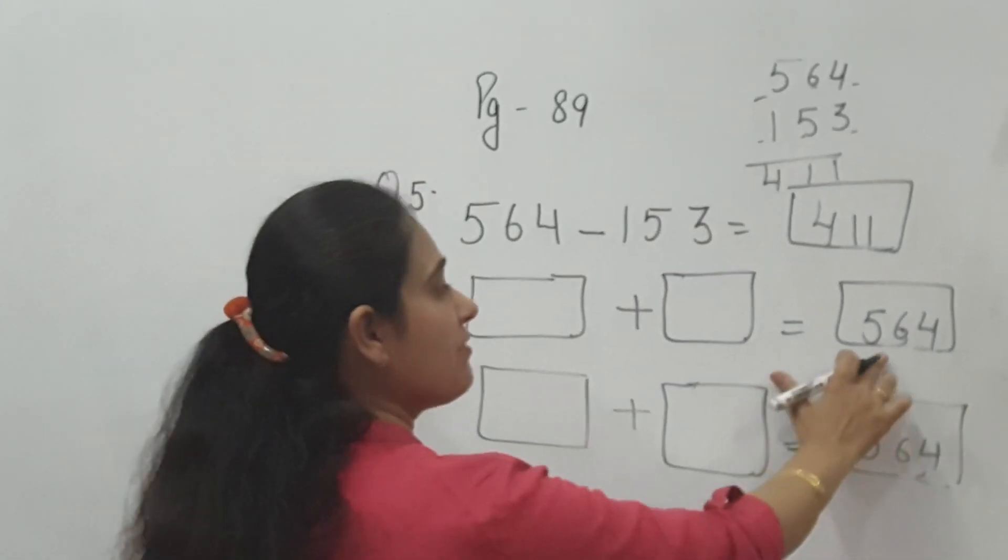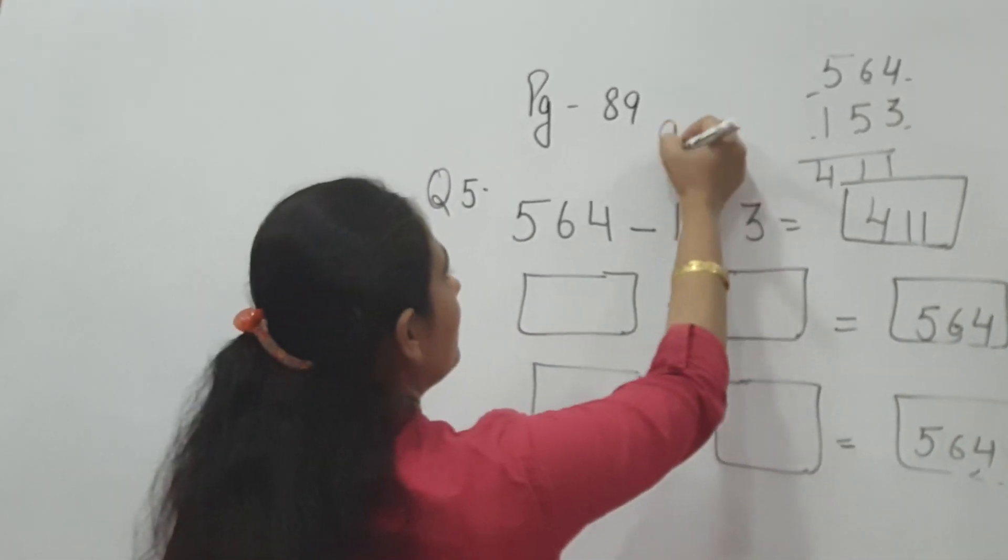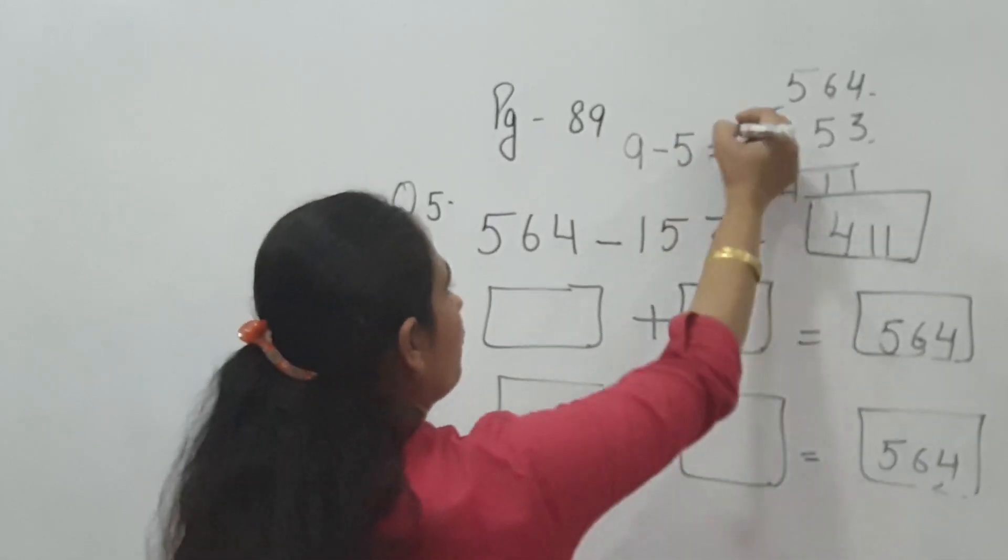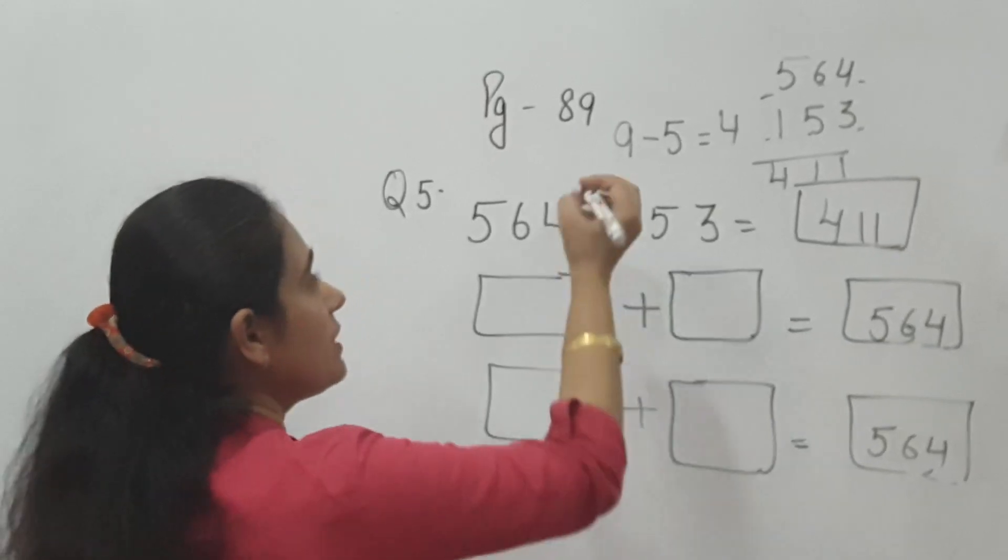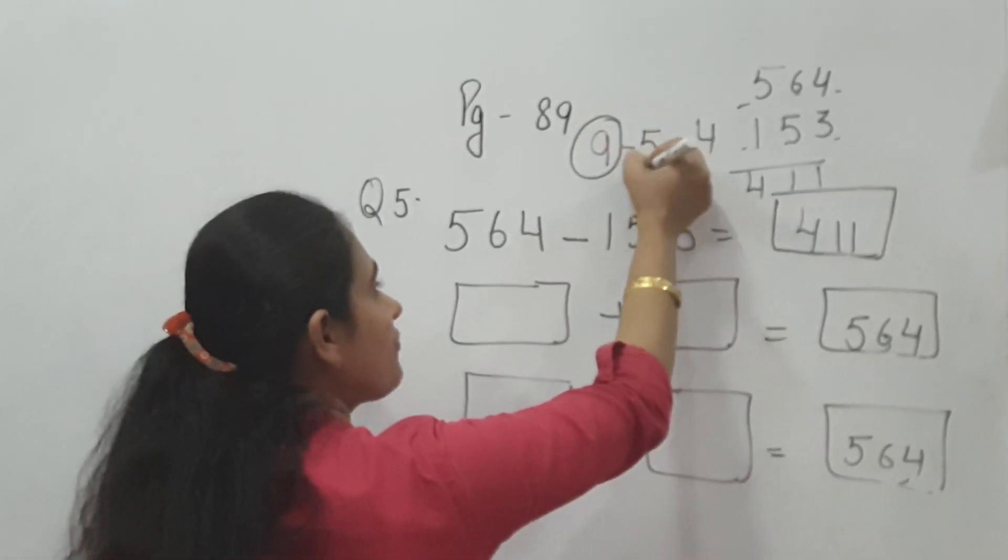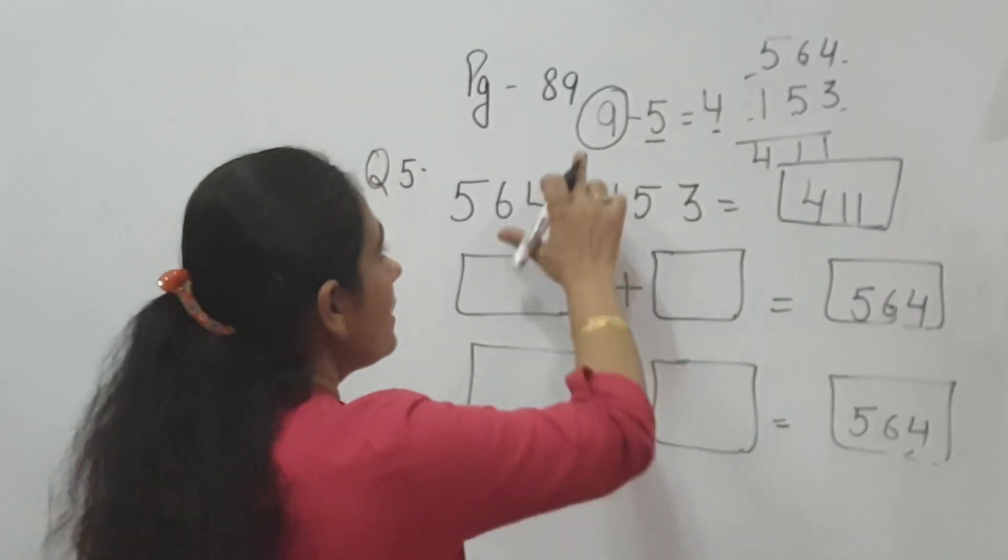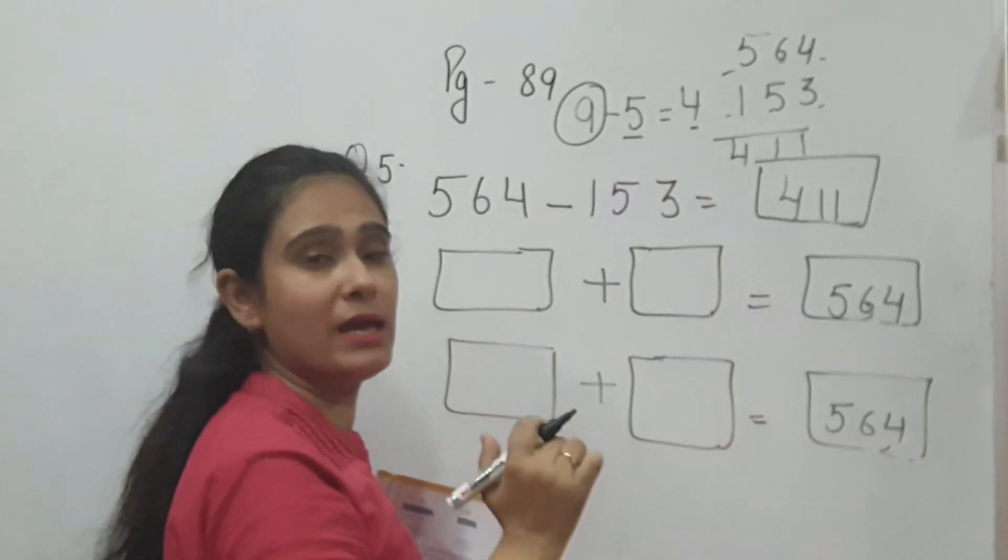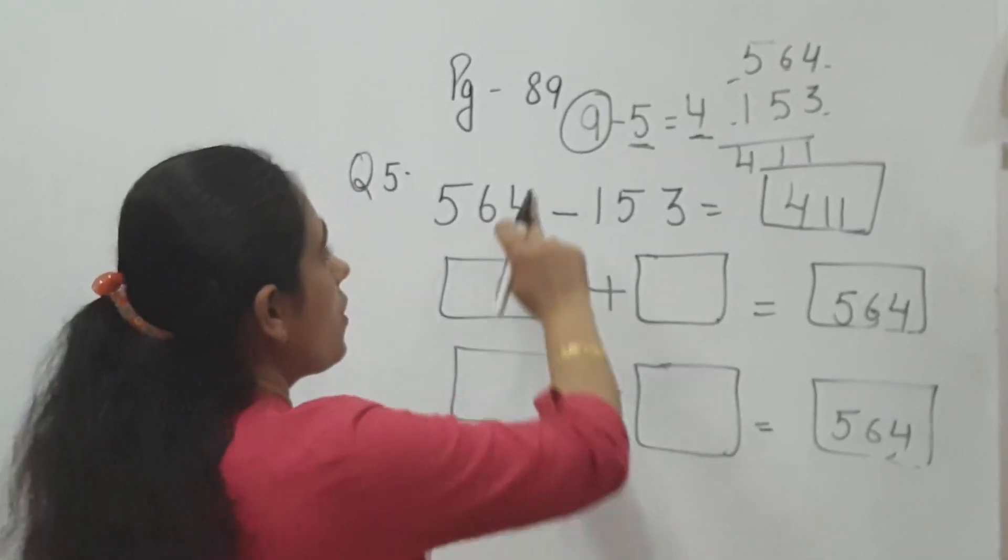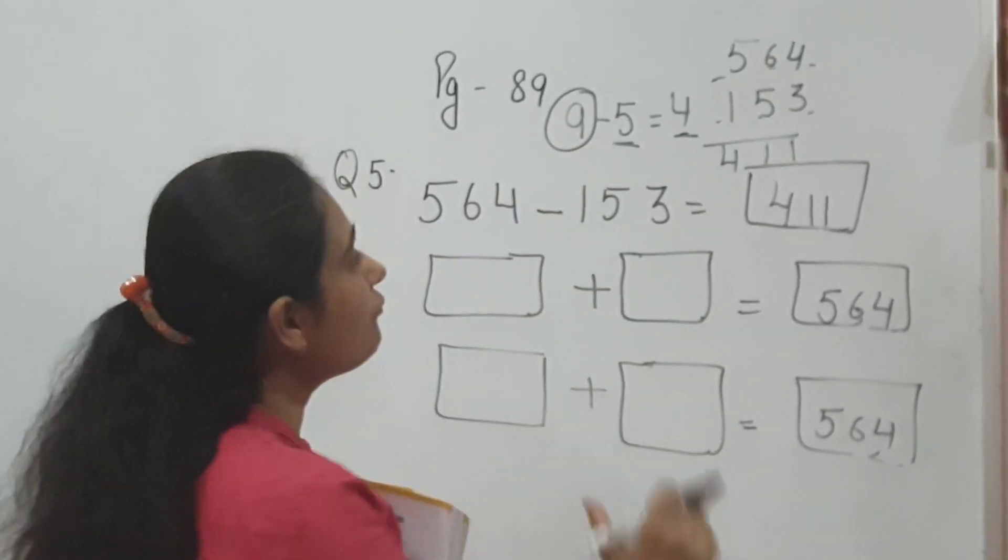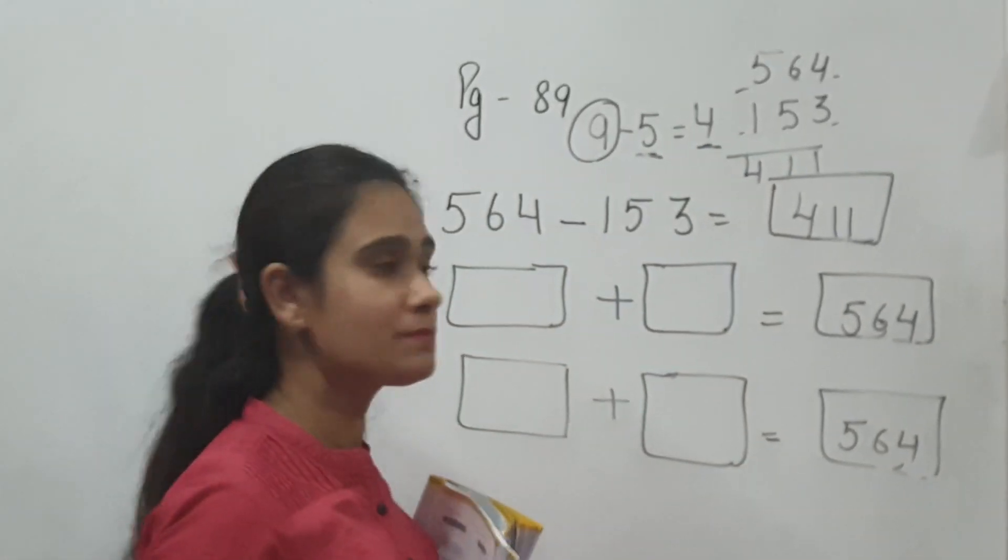Now, here is 564 given. I am going to give you one more example. 9 minus 5 is equal to 4. It means this is a big digit. We have cut 5 from this, so how much did we get? 4. So we have cut 4 from this. It means you have to plus this and this, then we will get 9. If we add 5 plus 4, then 9 will come.